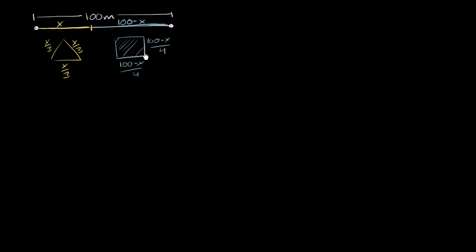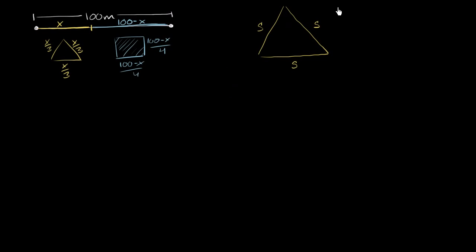It's easy to figure out an expression for the area of the square in terms of x. But let's think about what the area of an equilateral triangle might be as a function of the length of its sides. So as an aside: we have an equilateral triangle with sides of length s, s, and s. The area of a triangle is 1/2 times the base times the height.